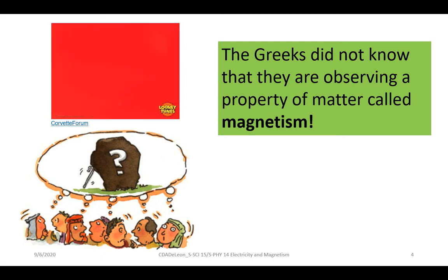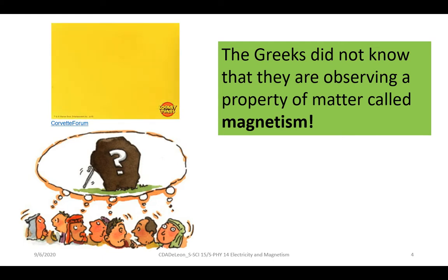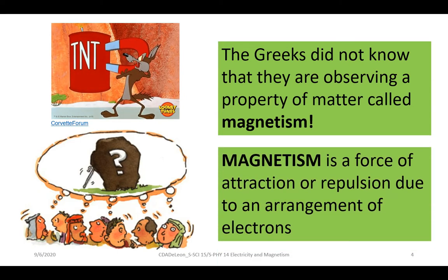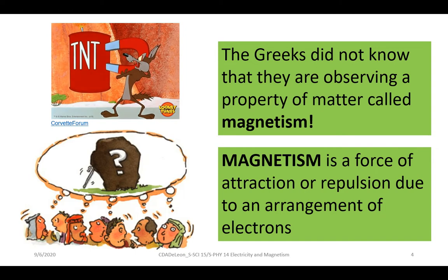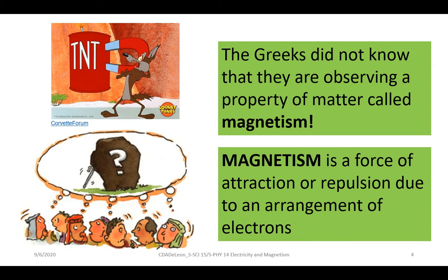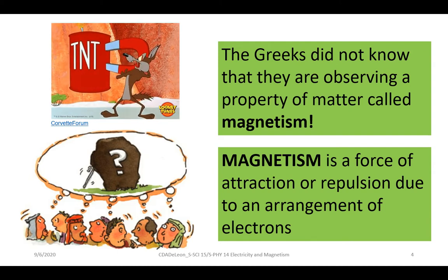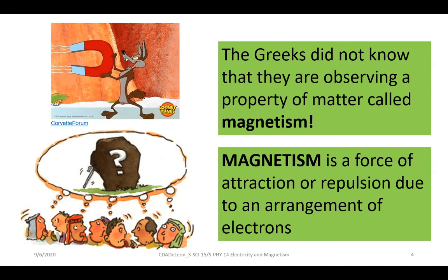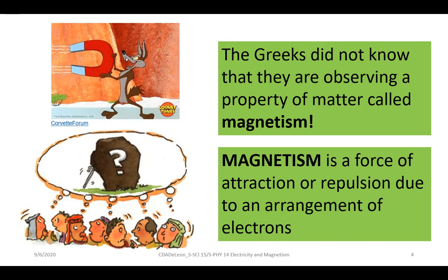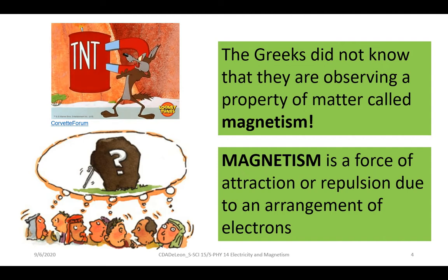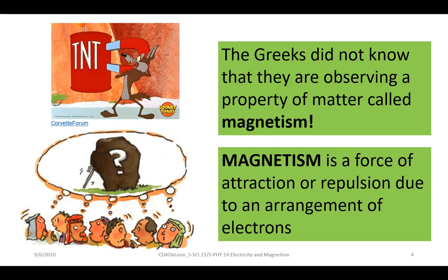The Greeks did not know that they were observing a property of matter called magnetism. Magnetism is a class of physical phenomena that are mediated by magnetic fields. Electric currents and the magnetic moments of elementary particles give rise to a magnetic field, which acts on other currents and magnetic moments. Magnetism is a force of attraction or repulsion due to an arrangement of electrons.